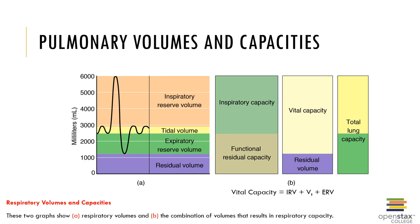Other respiratory capacities include inspiratory capacity, or IC, which is the maximum amount of air that can be inspired after a normal expiration, equal to IRV plus tidal volume. Functional residual capacity, or FRC, is the amount of air remaining in the lungs after completing a quiet respiratory cycle, equal to ERV plus RV.